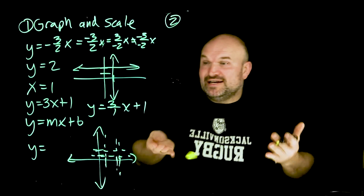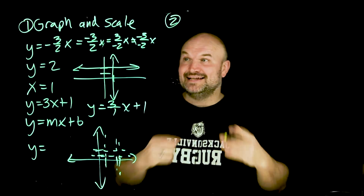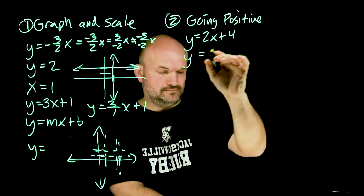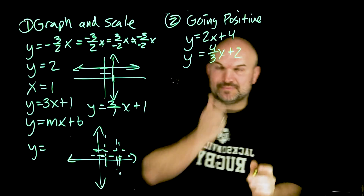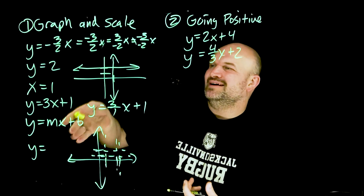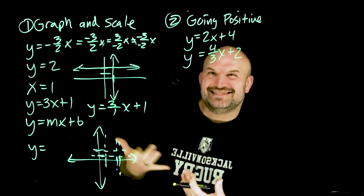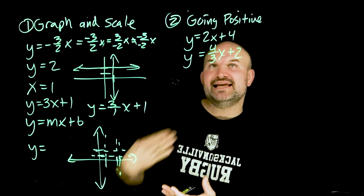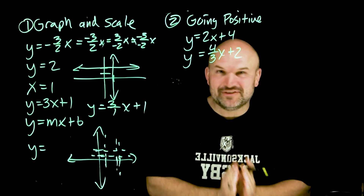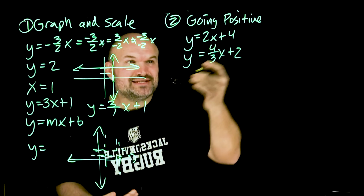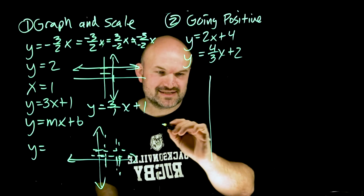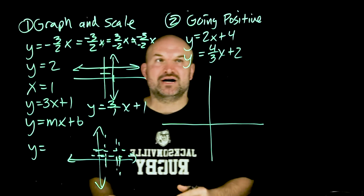The next mistake is actually very common when solving a system of equations by graphing. Students will get a problem and say, everything's positive, I have everything in slope-intercept form, I've got this. The mistake students make is they always want to go positive and keep going positive until they figure things out. Unfortunately, the intersection point — the solution — is actually down and to the left. Let me do my best scaled version so you can see exactly what I'm talking about.